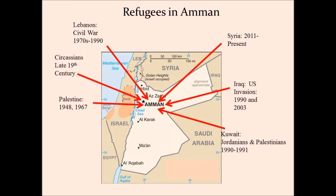Some came from Lebanon, but not as actual refugees — mostly as investment in Jordan because of the war. Then after Saddam invaded Kuwait, thousands of Palestinians and Jordanians returned to Amman. Then the Iraq wars, both of them — the U.S. invasion of Iraq in 1990 — a large number of Iraqis started to come to Jordan, and after 2003 more and more came in. And the last wave of refugees after 2011 from Syria, which is still going on.